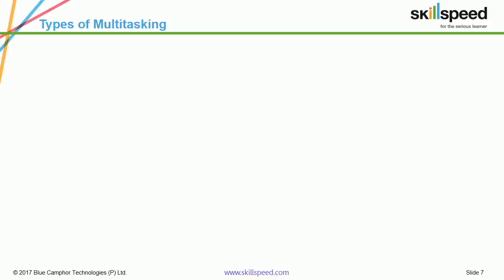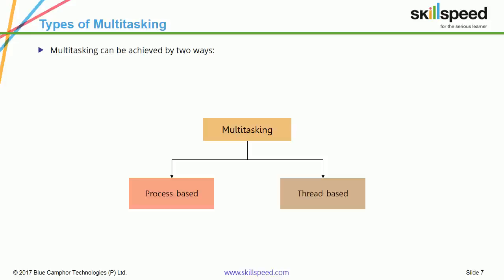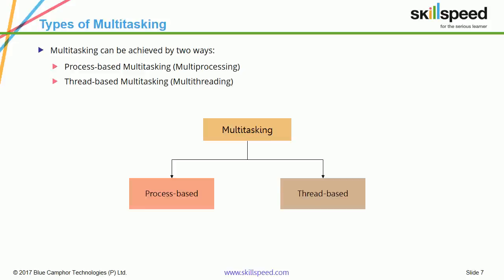Because we have got an idea about concurrency and what is multi-tasking, let us look at the types of multi-tasking. Multitasking can be achieved in two ways: either by process-based multi-tasking, which is called multi-processing, or by thread-based multi-tasking, which is called multi-threading.